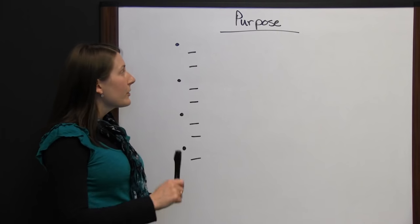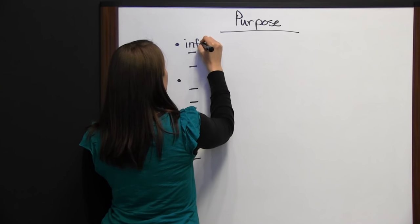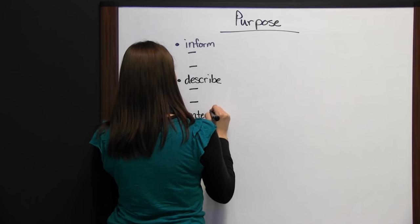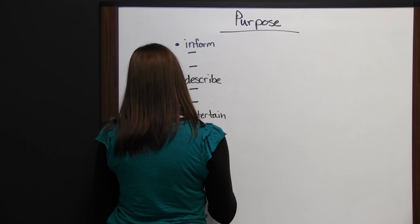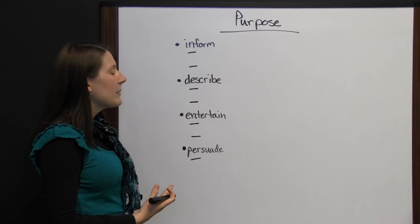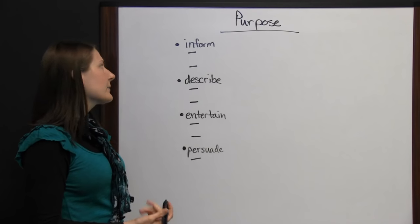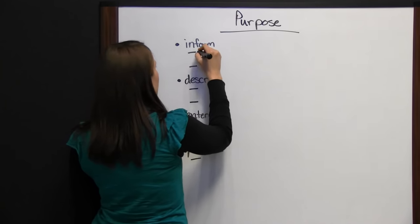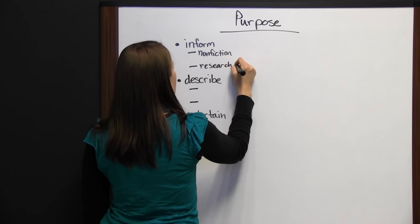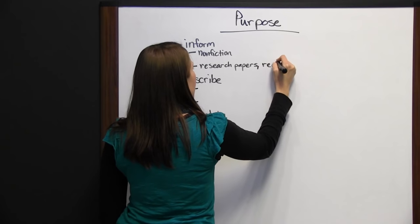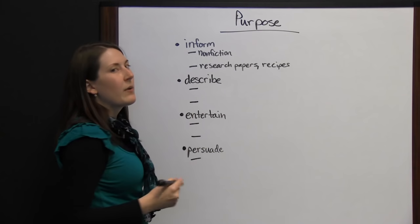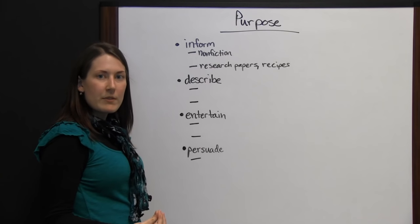An author writes with one of four purposes in mind. Once we figure out which purpose the author is writing with, we'll better understand their motivations for writing. If the author is writing to inform, it will probably be non-fiction — examples include research papers or recipes. The author is informing you of something or how to do something; their purpose is simply to inform.